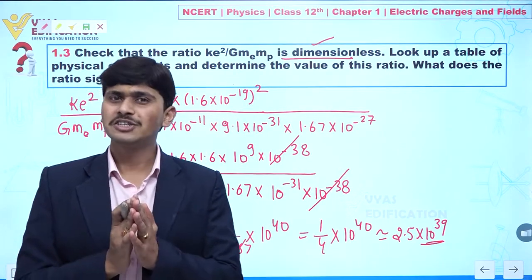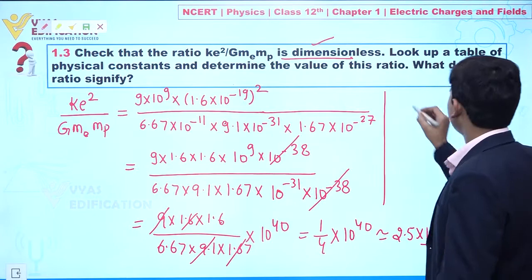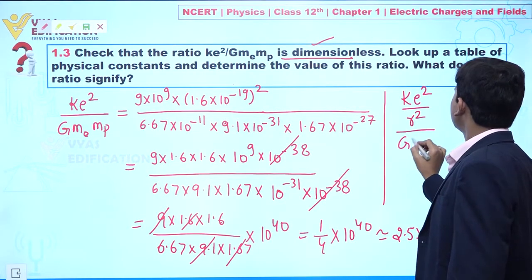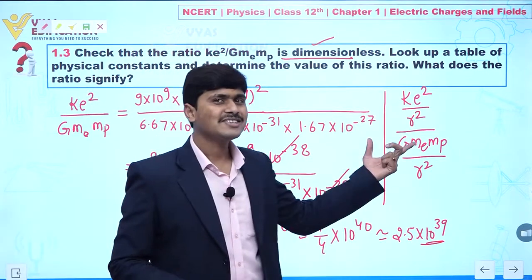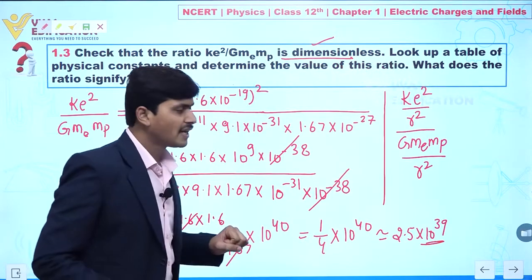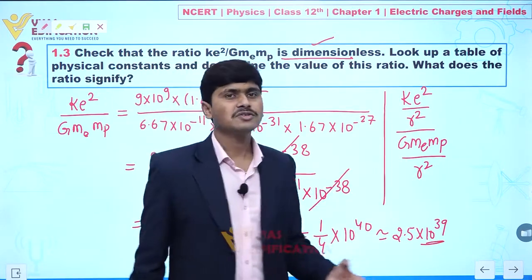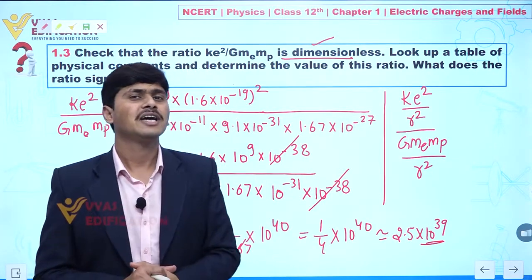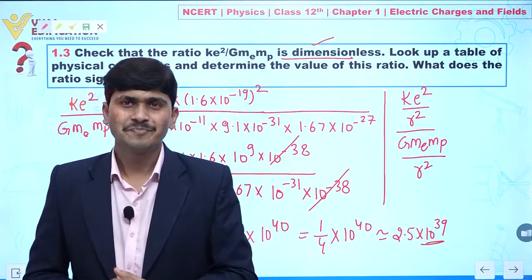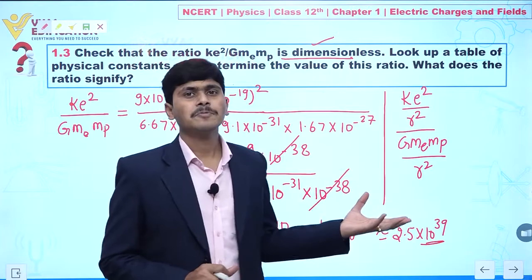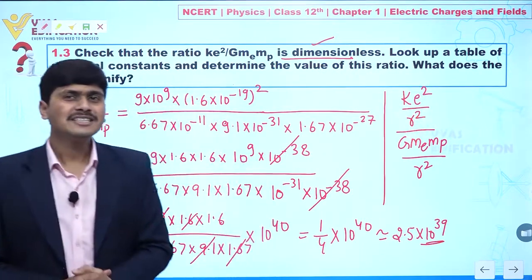The significance of this ratio: ke² divided by G·me·mp is the ratio of electrostatic force to gravitational force, since both ke²/r² and G·me·mp/r² are force expressions. The ratio being ~10³⁹ means electrostatic force is much stronger than gravitational force. Gravitational force is the weakest force in nature, while the strongest is nuclear force. So the significance of this ratio is that electrostatic force vastly exceeds gravitational force.